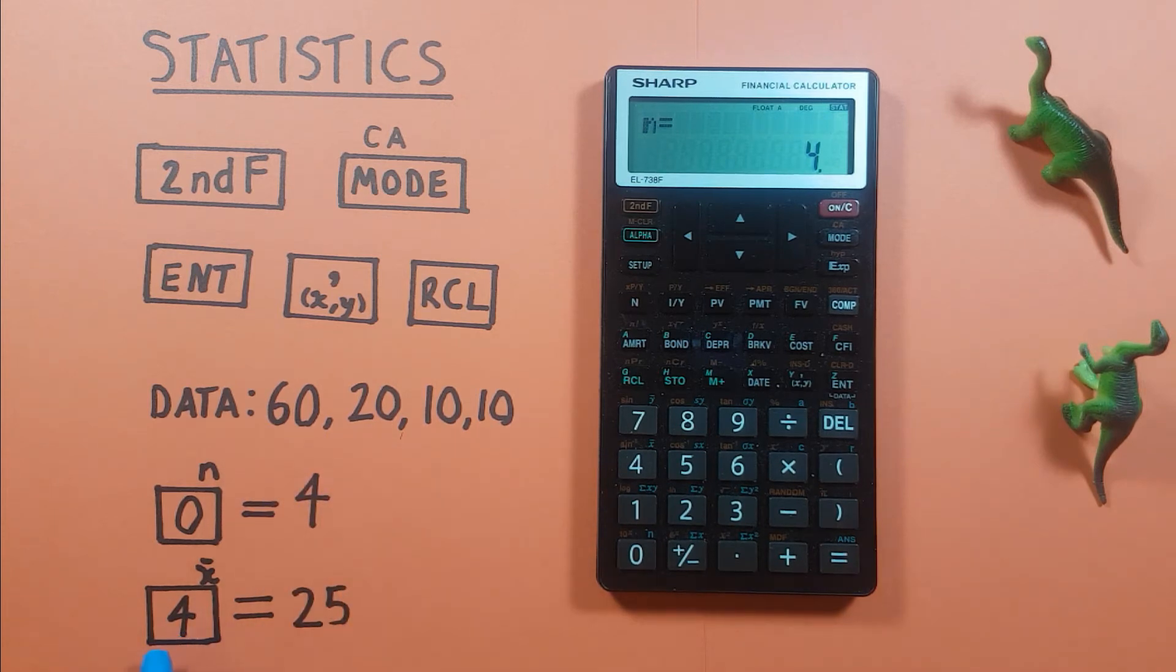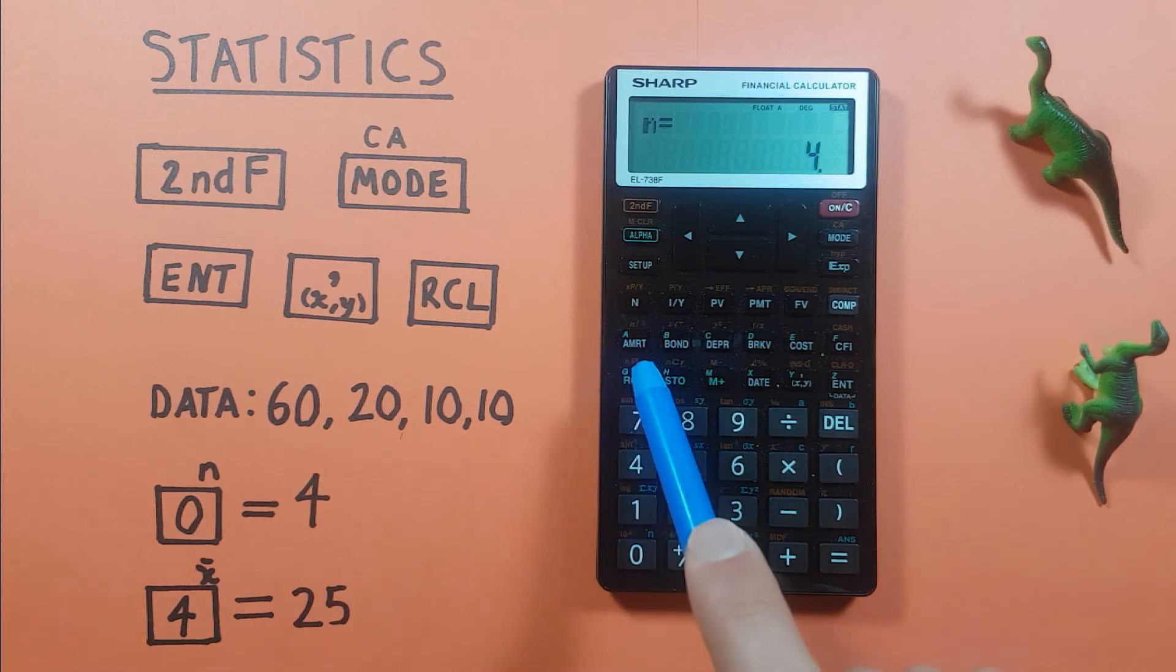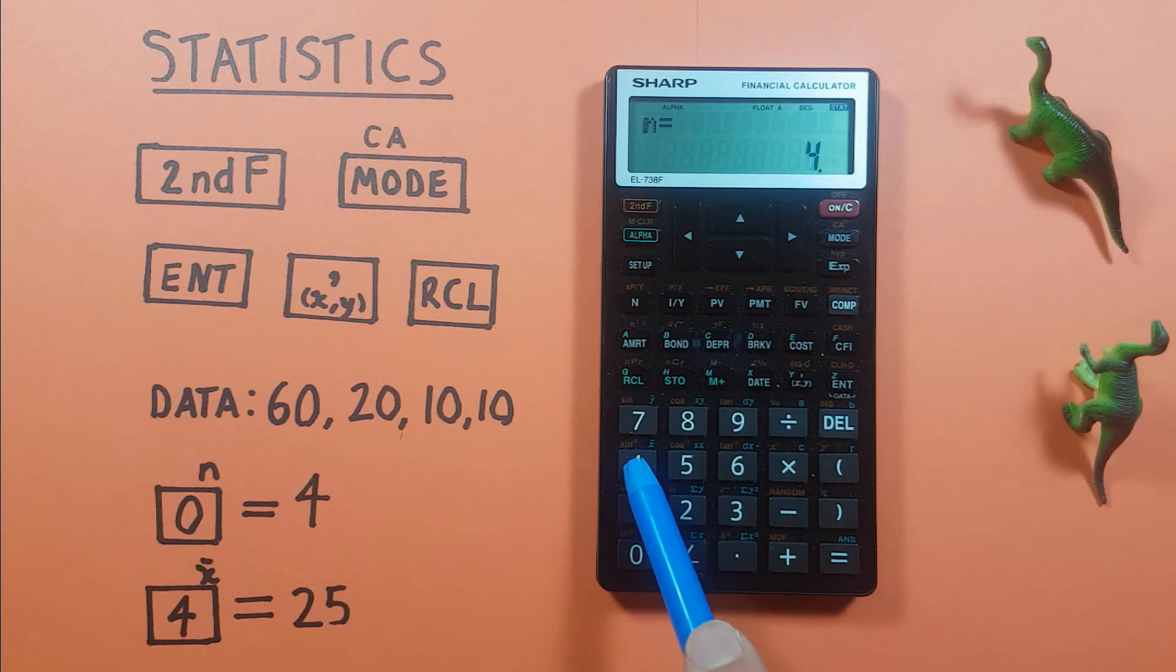Next let's check the mean or X̄. To get that we use the recall key and then 4 and there we see we get 25. So the mean of our data set is 25.